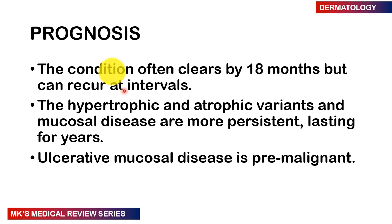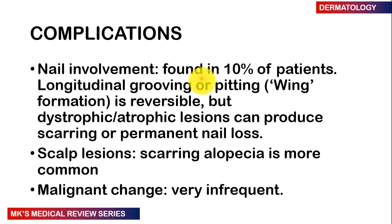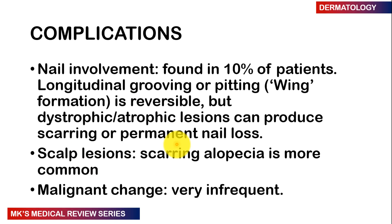Regarding prognosis, this condition often clears by 18 months but can recur at certain intervals. Hypertrophic, atrophic variants and mucosal disease are more persistent and can last for years. Ulcerative mucosal disease is premalignant and may progress to cancer. Complications include nail involvement in about 10% of patients with longitudinal grooving or pitting (wing formation), which is often reversible. Dystrophic or atrophic lesions can produce scarring or permanent nail loss. Scalp lesions may cause scarring alopecia. Malignant change is possible but very infrequent.